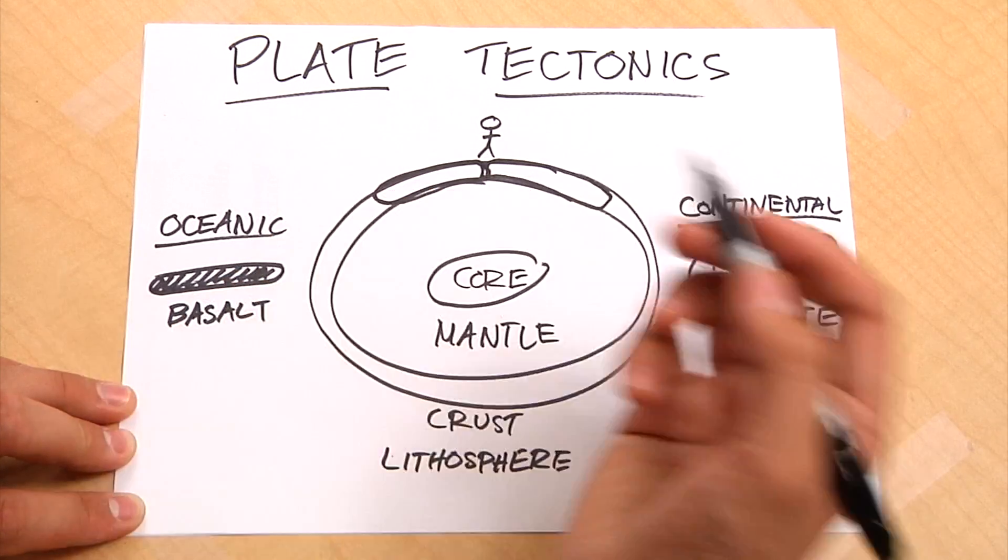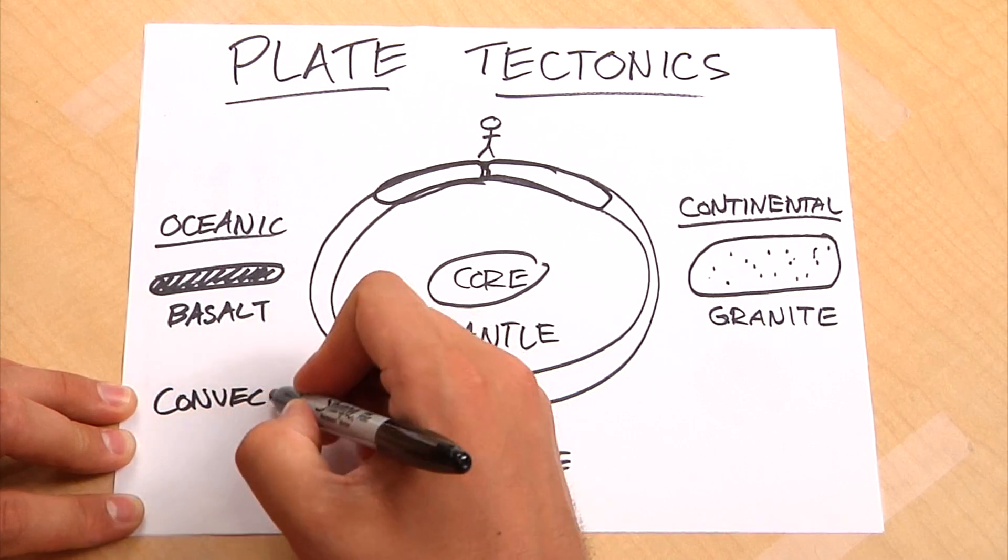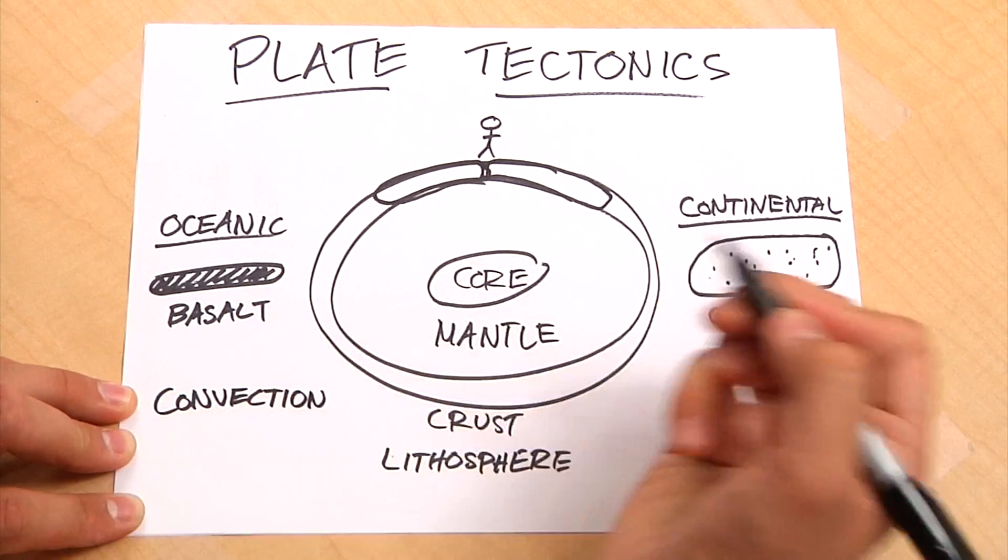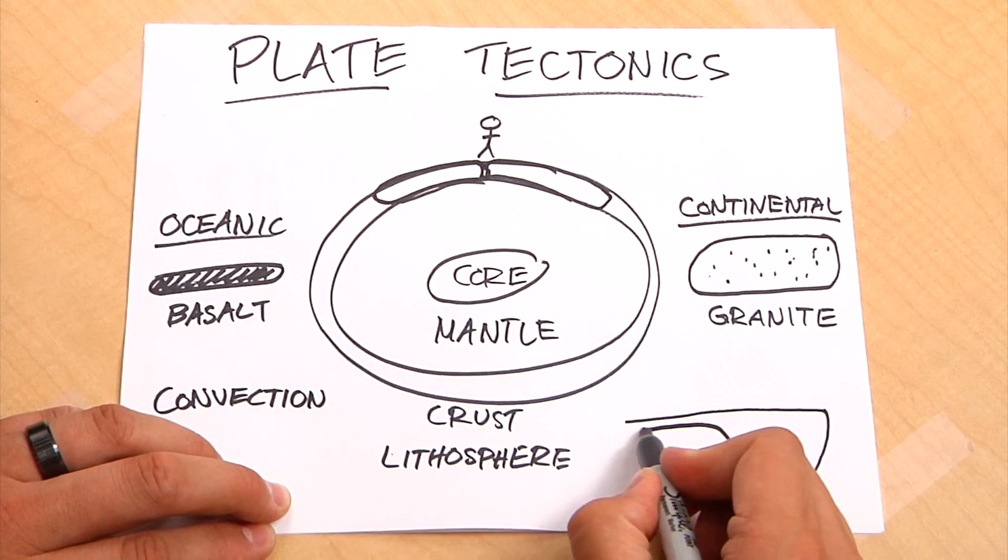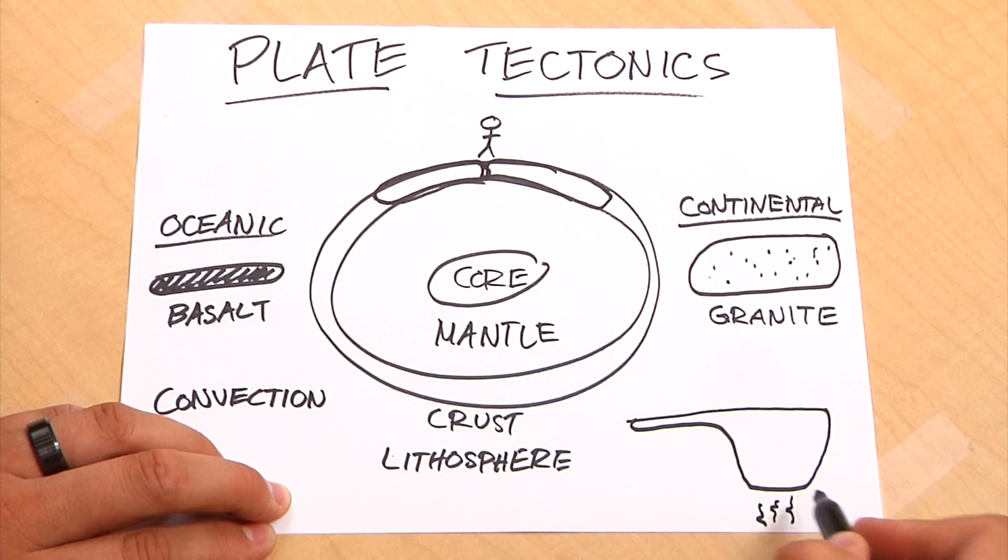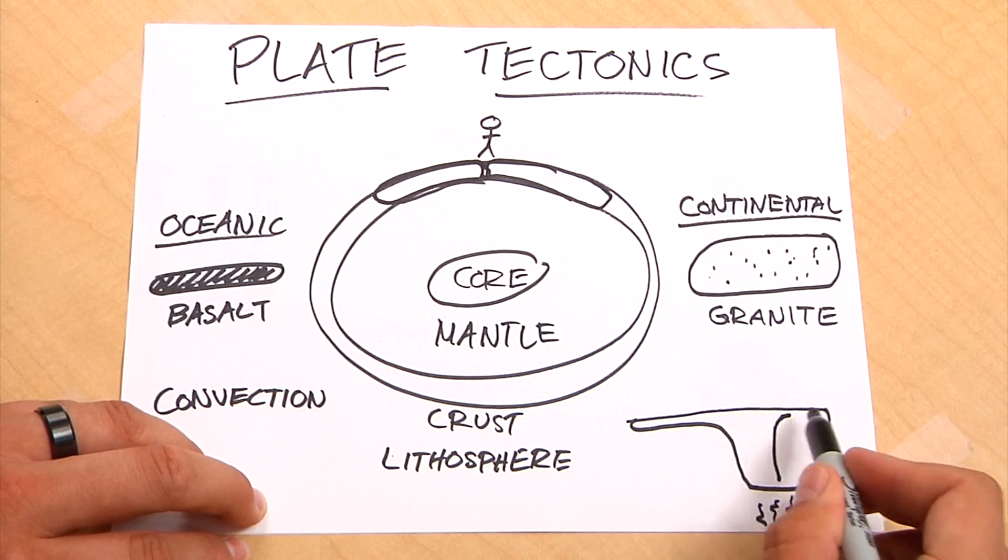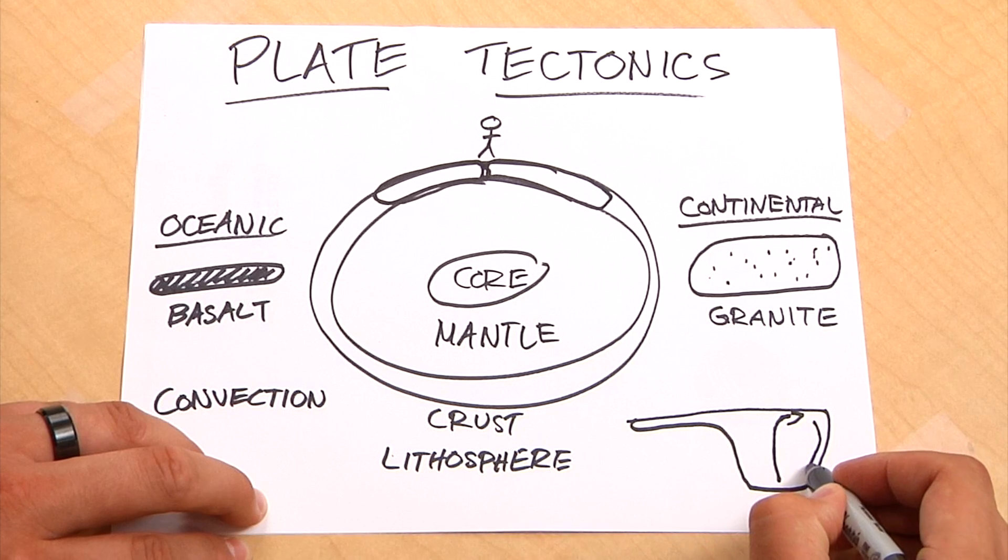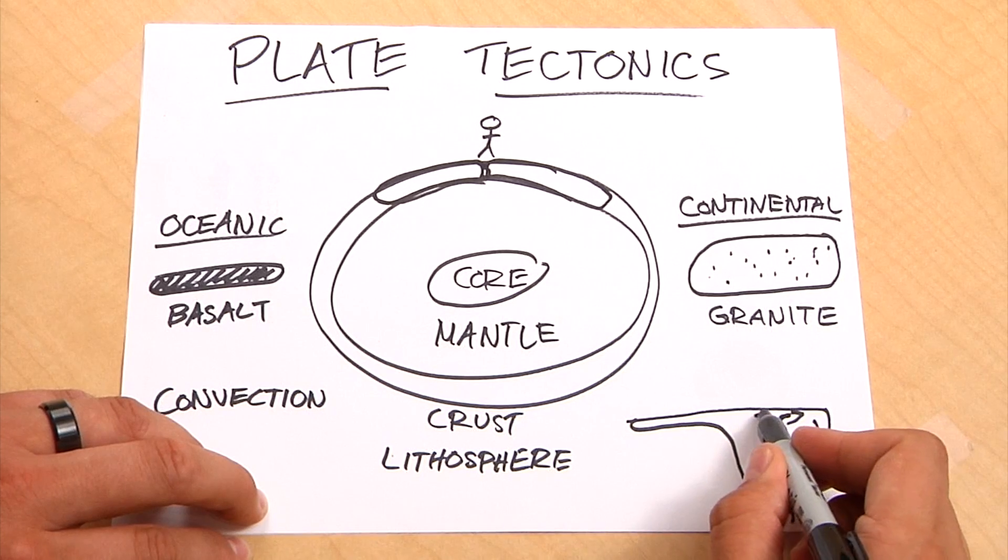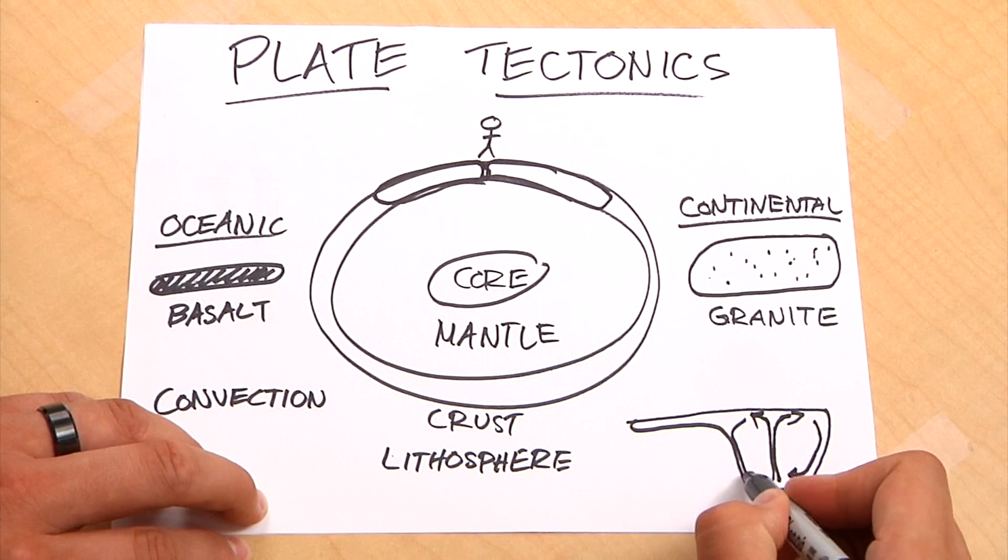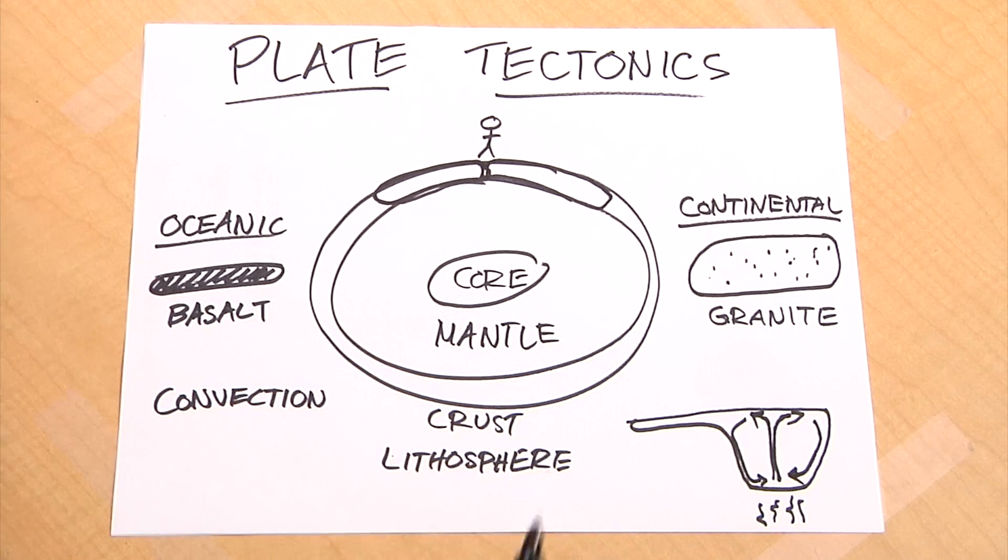And then the interesting thing about tectonics is that they move. Plates move because of two main things. And the first most important thing is something called convection or convection currents. If you've ever seen a pot of water that's boiling, it's on your stove, and there's heat coming up from the bottom, it causes the hot water in the center of the burner to rise. And then as it goes around the side of the pot, it cools. And you can see there's a little current formed there. There's another one on this side. That's called a convection current.